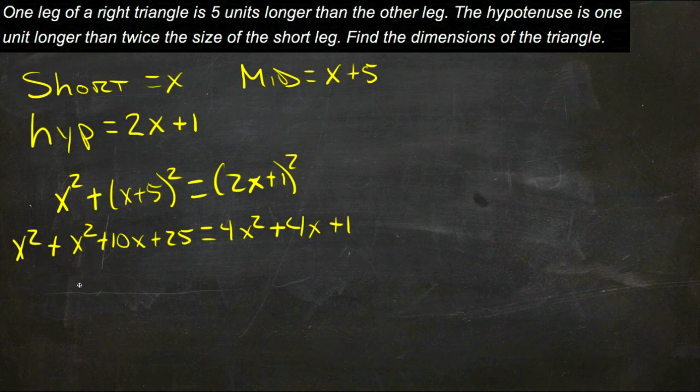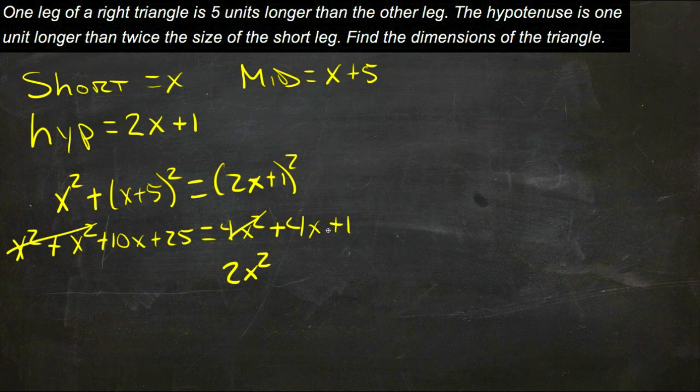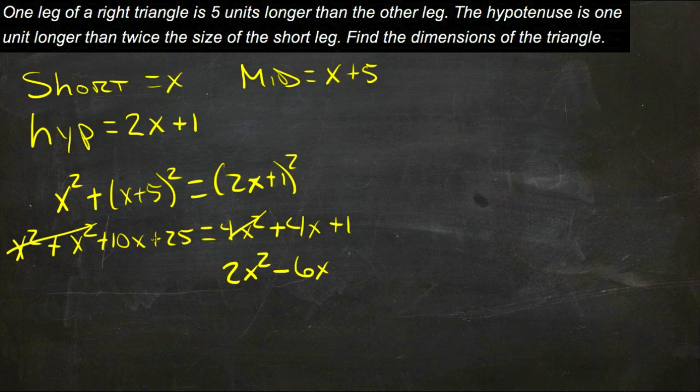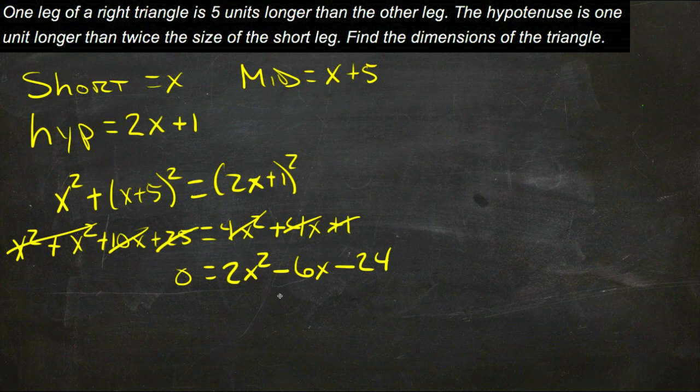We have 2x squared subtracted from 4x squared gives us 2x squared, 10x and 4x, if we subtract 10x from both sides, we'll get negative 6x, and then subtract 25 from both sides, we get negative 24, and that's equal to zero.